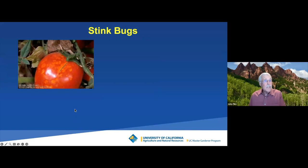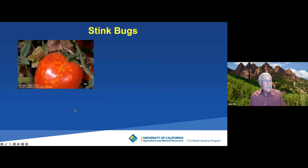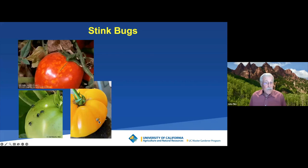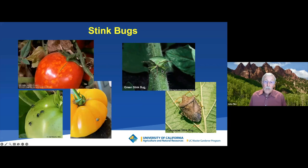Stink bugs are another interesting category of true bugs. You see discoloration in your tomatoes — they can also cause damage to some fruit. These are the nymphs, the babies of the green southern stink bug. Even when little, they put their piercing sucking mouth part into the fruit and suck the juices out. You see black markings where they have been feeding. There's nothing really wrong with this tomato — you can eat it. But stink bugs are hard to control.